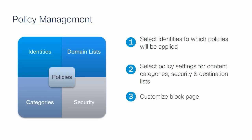Step 3: Customize the block page. Customers can create one custom block page, or several per type of block page, and can also redirect to a custom URL. Step 4: Select logging preference — customers can choose full logging, security-only logging, or disable logging. Customers' policies can be very complicated, so before applying new or updated policies, customers can run simulations using the Umbrella Policy Tester tool to check if policies enforce the way they were intended — this is a huge benefit for customers.